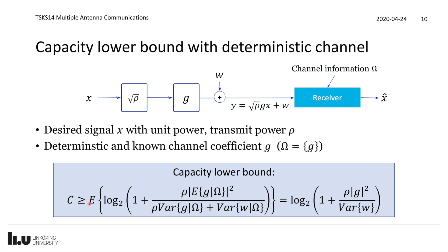If g is a deterministic constant and known, this expression simplifies greatly. The expected value of g is just g itself, the variance of g given Ω is zero, and the variance of w given the deterministic Ω is simply Var(w). The outer expectation over Ω also disappears. We obtain log2(1 + ρ|g|²/Var(w)). We will now rewrite the uplink received signal to utilize this simplified form.